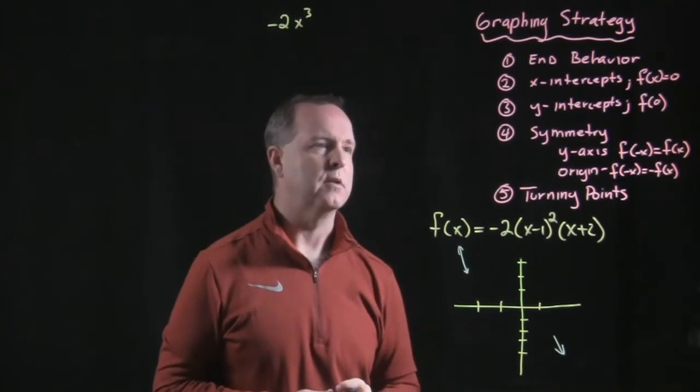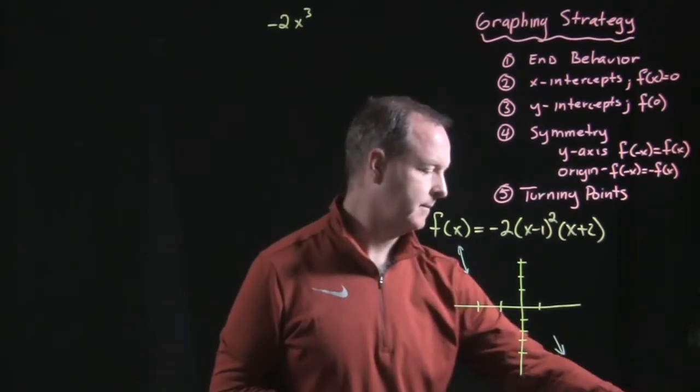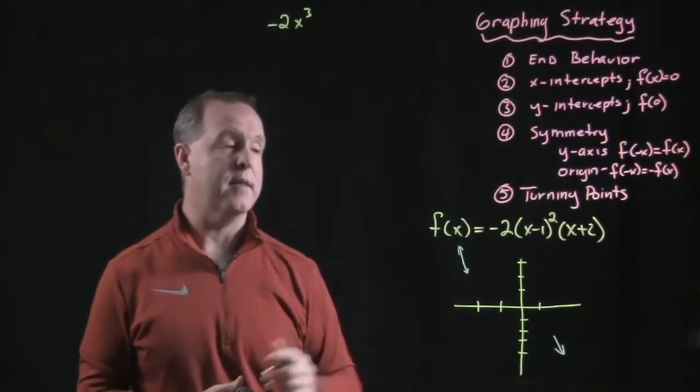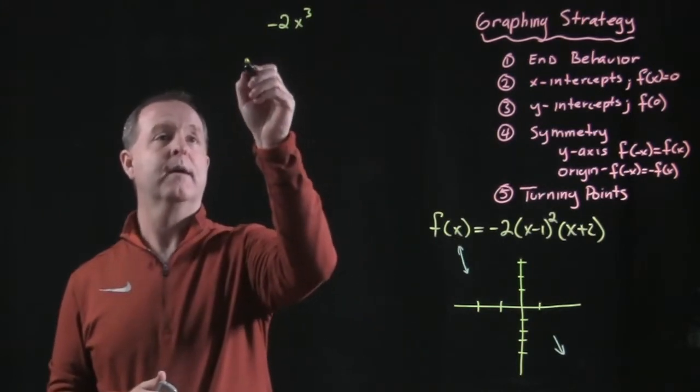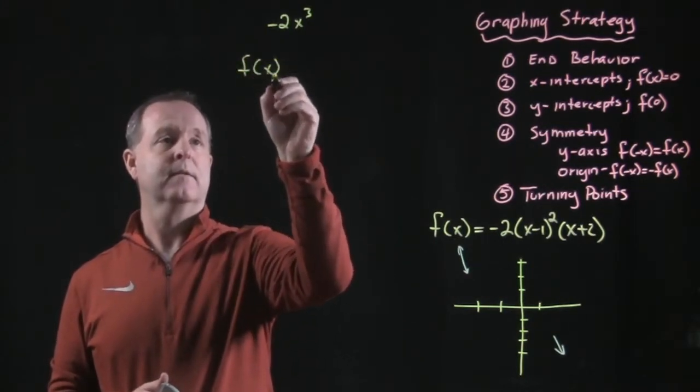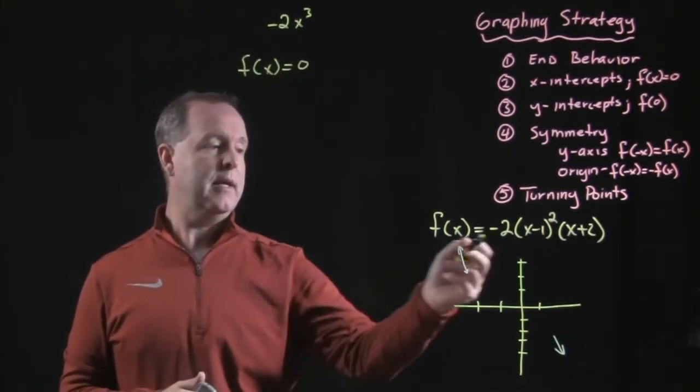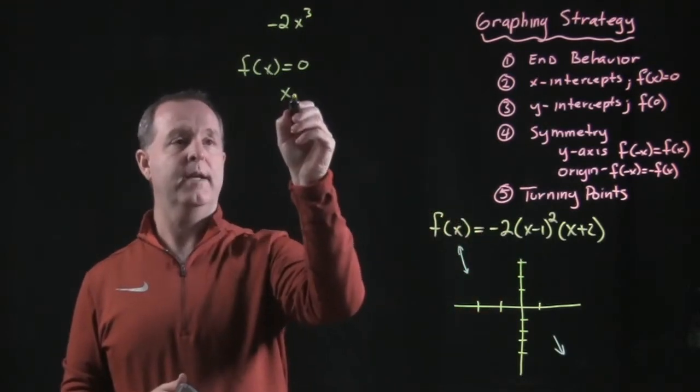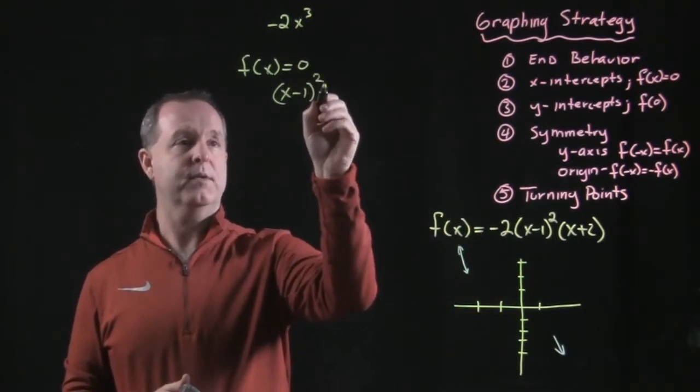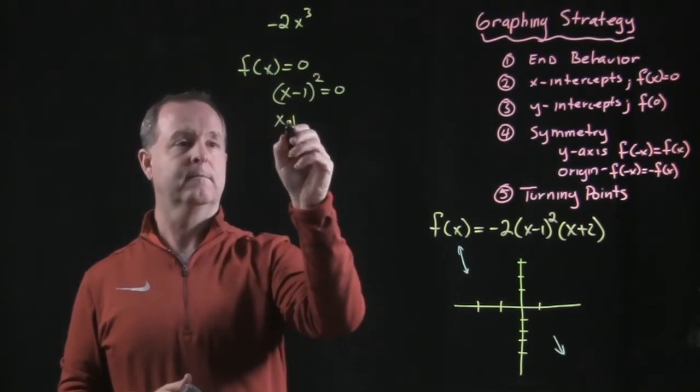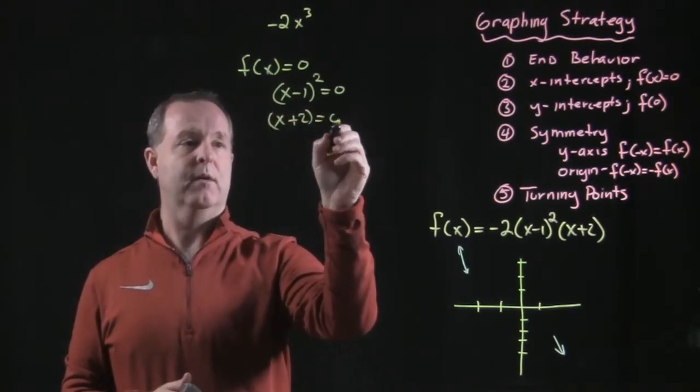Alright, step 2, look for its x-intercepts. To do that, we're looking for where this graph equals 0, or where f of x equals 0. That's true when x minus 1 squared equals 0, or x plus 2 equals 0.